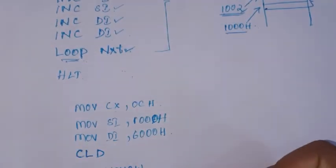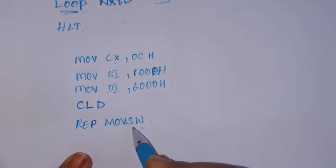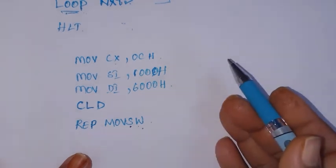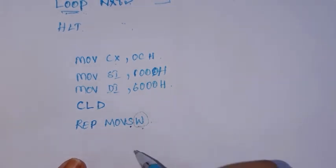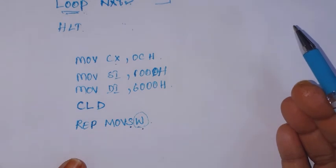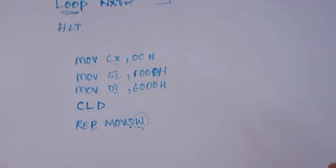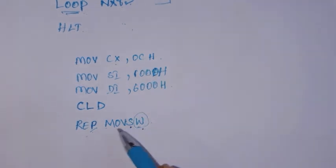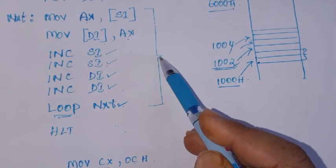Now write REP MOVSW - this single instruction does the work of all those previous instructions. It transfers one word from the memory pointed by SI to the memory location pointed by DI, then SI and DI are automatically incremented by two to point to the next words, and CX is decremented by one. If CX is not zero, MOVSW repeats until CX becomes zero.